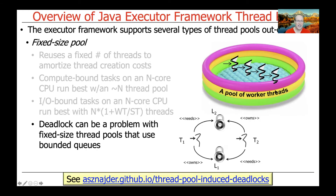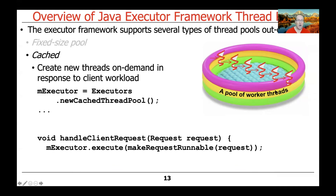Another potential downside of fixed-size thread pools is that deadlock can be a problem. Because you only have a fixed number of threads, if they use a bounded queue to queue up work, you can end up with threads blocked and the queue filling up so the system can't make progress. The link at the bottom of the slide explains the situations that induce deadlocks in thread pools with a fixed number of threads and a bounded queue.